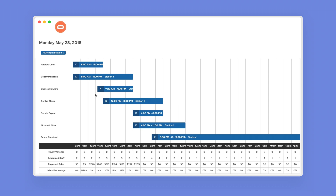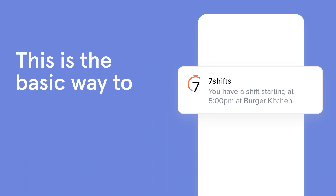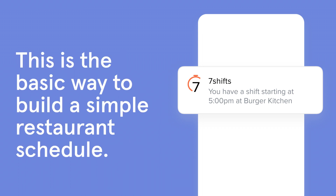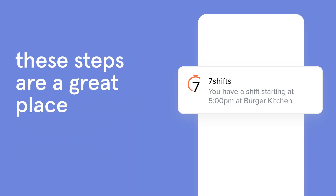When it's all planned out, fill out each shift so that there's ample coverage all day, publish your schedule, and share with your staff. Web-based scheduling tools will notify your staff automatically that there is a new schedule available and what shifts they work. This is the basic way to build a simple restaurant schedule. As the restaurant scales, so does the scheduling complexity, but these steps are a great place to start.